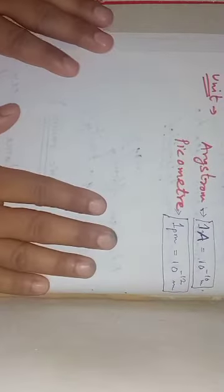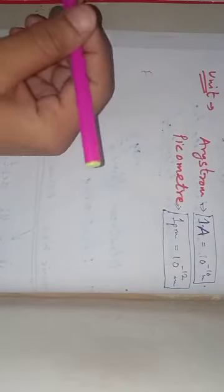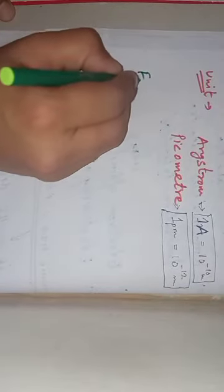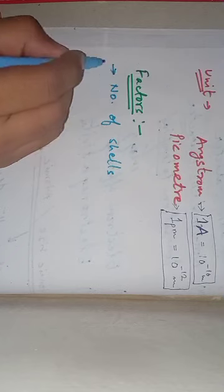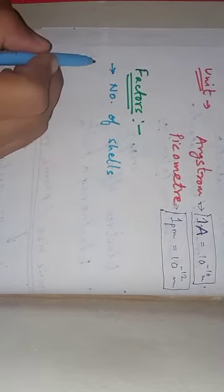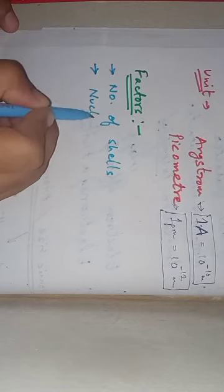Let us talk about the factors affecting atomic size. It's very simple. Atomic size, or atomic radii, depends upon two main factors: number of shells and nuclear charge.